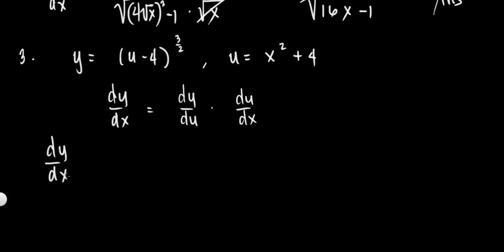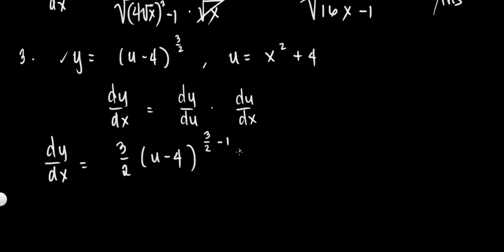dy over dx is equal to dy over du multiplied by du over dx. So dy over dx is equal to the derivative of y with respect to u. Using the power rule: 3 halves times (u minus 4), raised to 3 halves minus 1. The derivative of u with respect to u is 1.